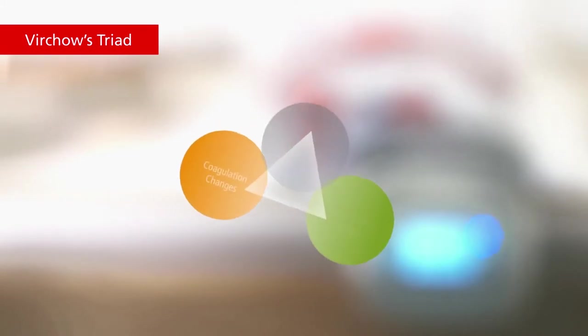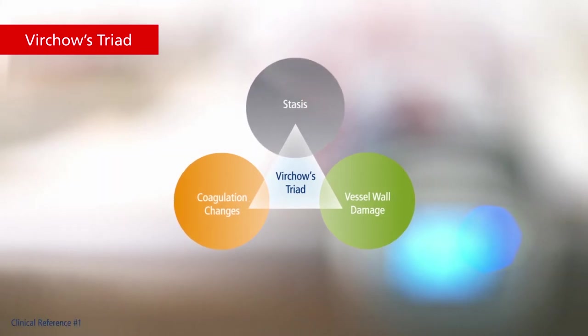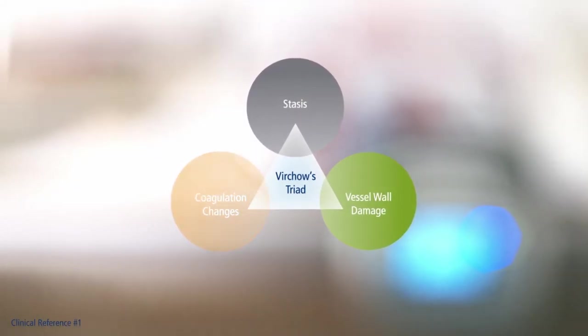The system works by addressing two of three factors of Virchow's triad: stasis by increasing blood flow, and coagulation changes by stimulating fibrinolytic activity.